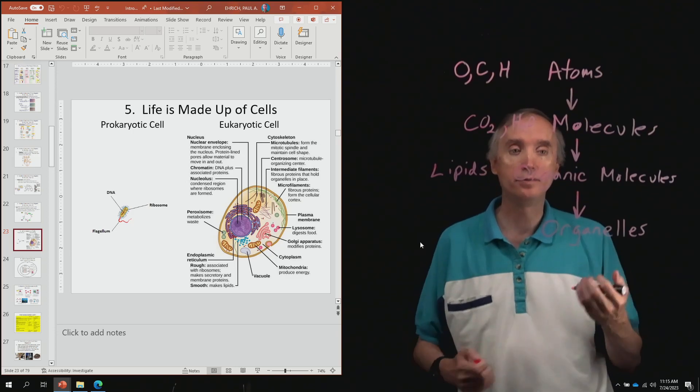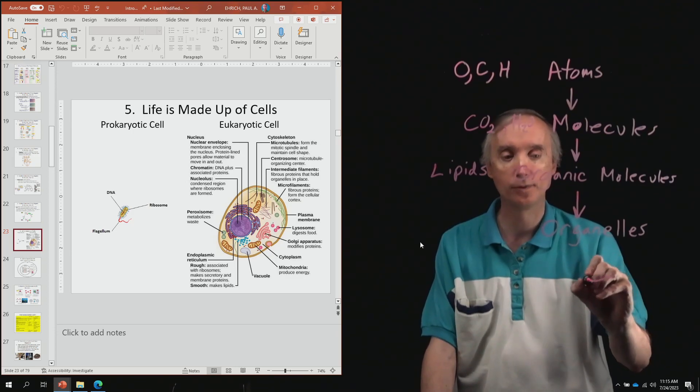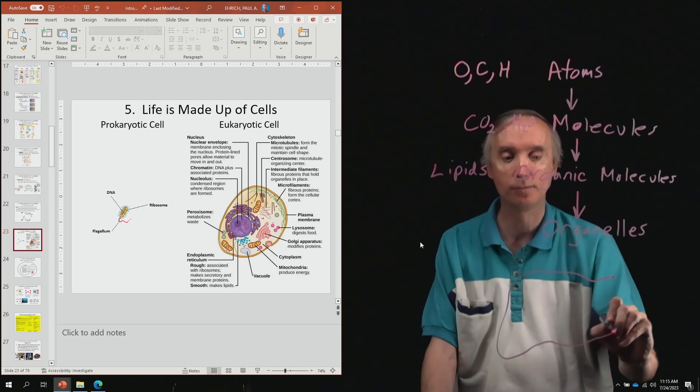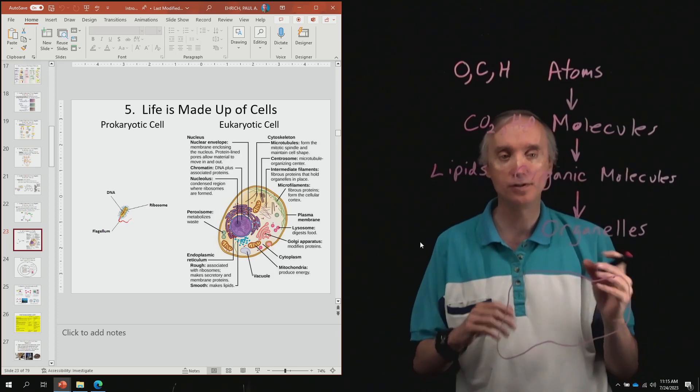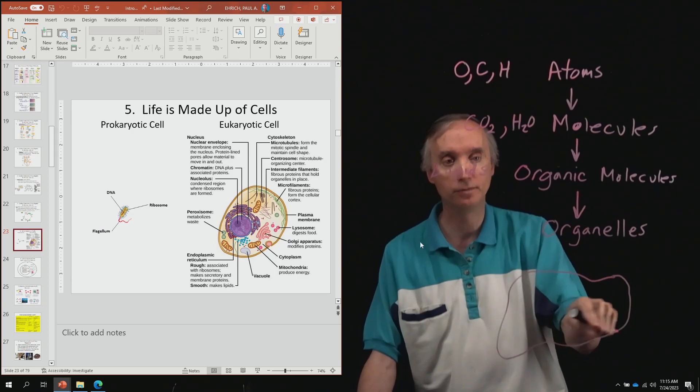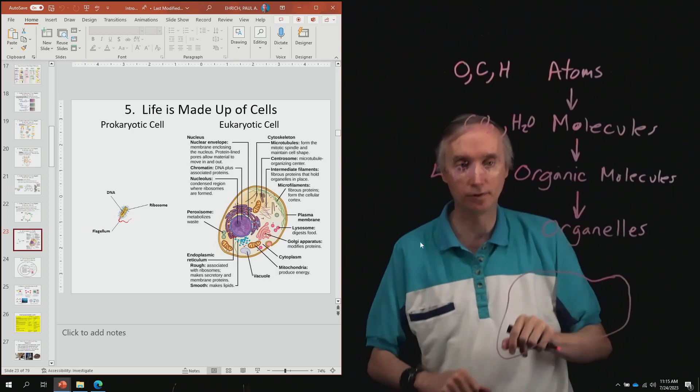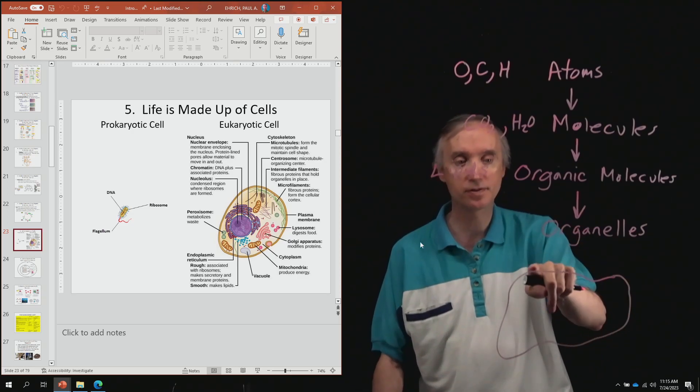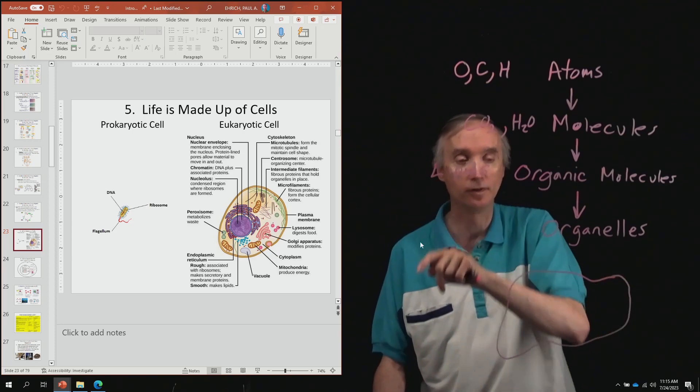So one type of organelle that I would like for you to know about is the cell membrane. Every cell of your body has a cell membrane that keeps all of the other material inside of it. And then this cell membrane is going to be made up of lipids.